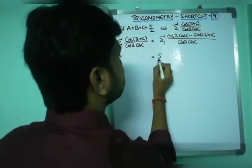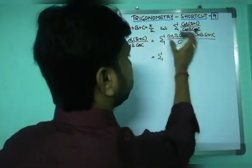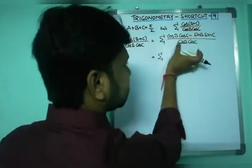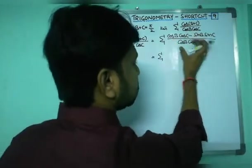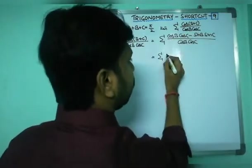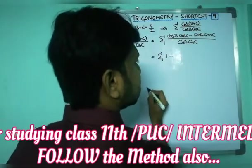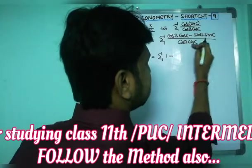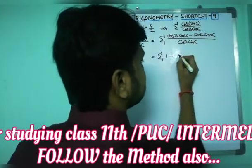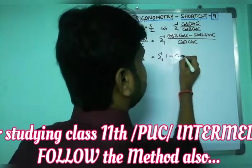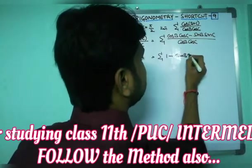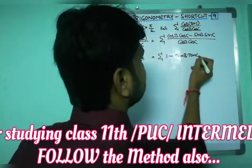So this equals sigma. If you split it, cos b · cos c will cancel. You are left with 1 minus sin b/cos b · sin c/cos c, which gives you 1 minus tan b · tan c.